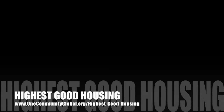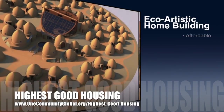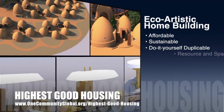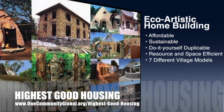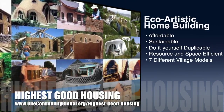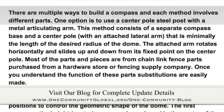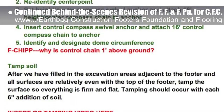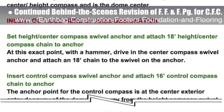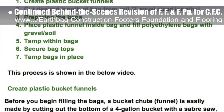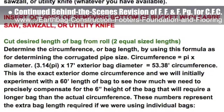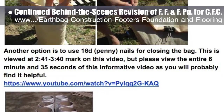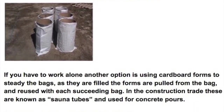The OneCommunity approach to highest good housing is eco-artistic home building that is affordable, sustainable, do-it-yourself duplicable, resource and space efficient, and consists of seven different sustainably constructed village models. This last week, the core team put another 10 hours into the behind-the-scenes revision for the footers, foundations, and flooring page for the crowdfunding campaign we are developing. This week's focus was reviewing, editing, and inserting title steps for Section 8, Compass Installation, and Section 9, Bag Preparation and Filling, including additional narrative added to Section 9. We'd say we are now 70% complete with this total update and rewrite.